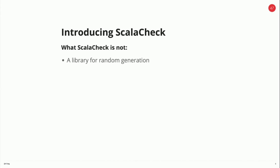What is ScalaCheck not? It's not a random library. If you want code that produces random values, don't use ScalaCheck. It is not normally distributed. It tends to focus around natural edge cases. So if you're looking at integers, you'll tend to find that ScalaCheck will generate lots of zeros and ones, minus ones, integer maximum, integer minimum, those kind of things. It will give random numbers in between those, but it tends to focus on those. So if you want random, don't use this.